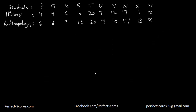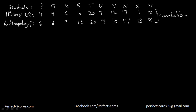Now let's understand correlation in a more formal, definition-type way. Suppose I have ten students — P, Q, R, S, T, U, V, W, X, Y — and this is their scores in a history test and this is their scores in an anthropology test. What I want to find is the correlation between these two variables. I want to find: if a student is good in history, is he also good in anthropology?